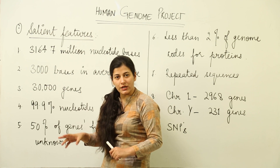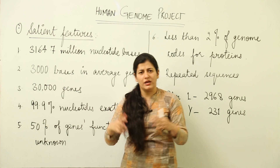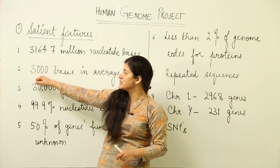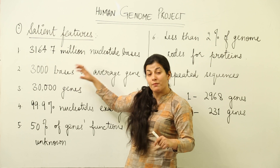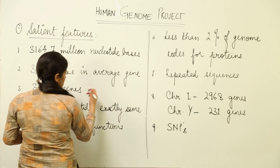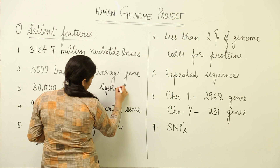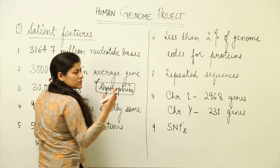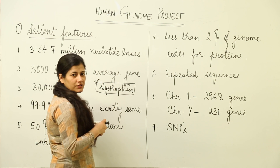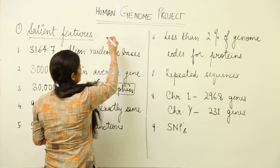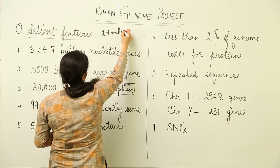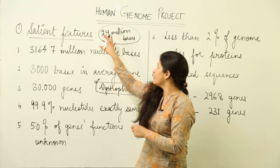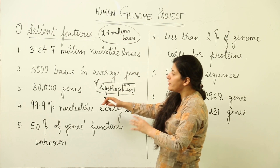How many bases are there in an average gene? It was approximated that there would be many base pairs, but later it was concluded that an average gene has approximately 3,000 bases. There are exceptions — the largest gene is dystrophin, which is responsible for muscular contractions. Dystrophin has as many as 2.4 million bases, while the average is only 2,000–3,000.